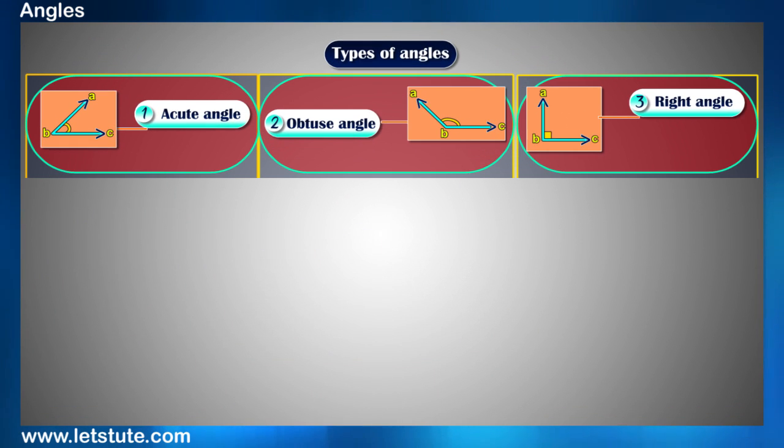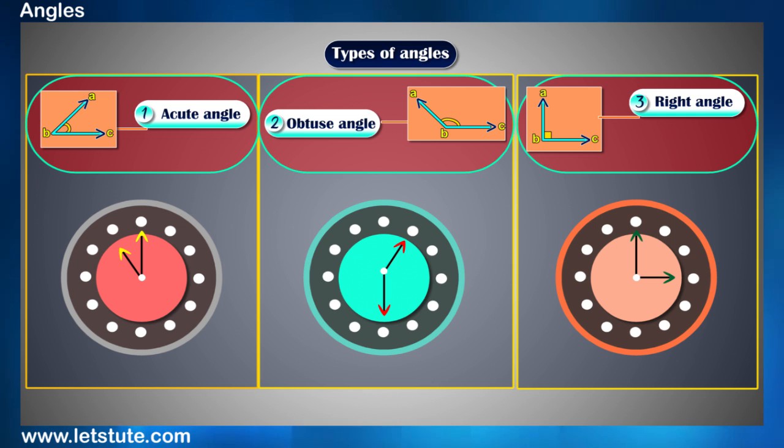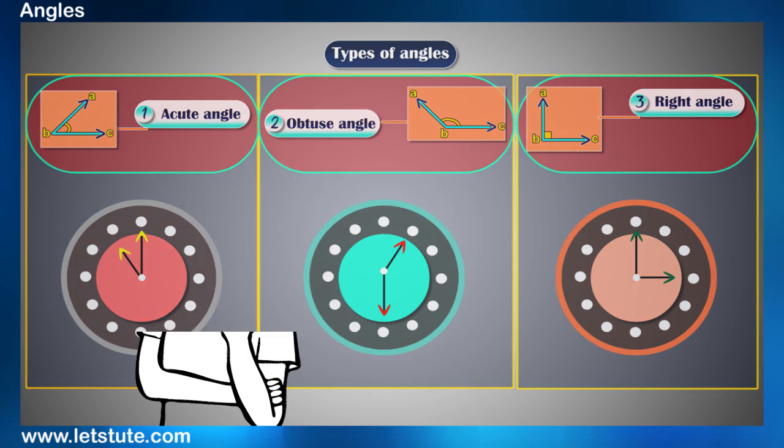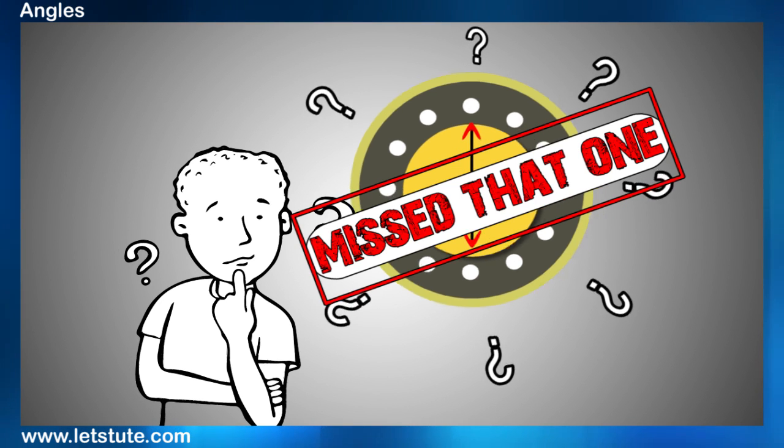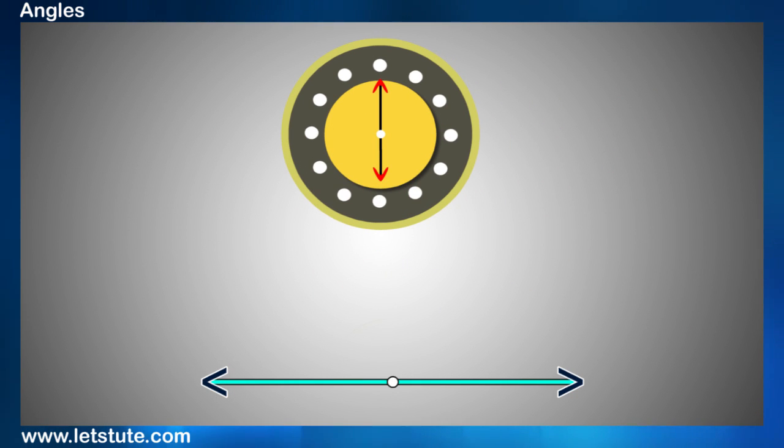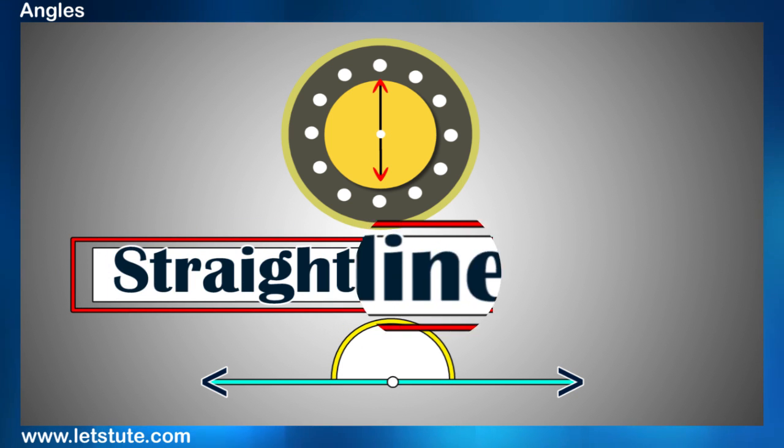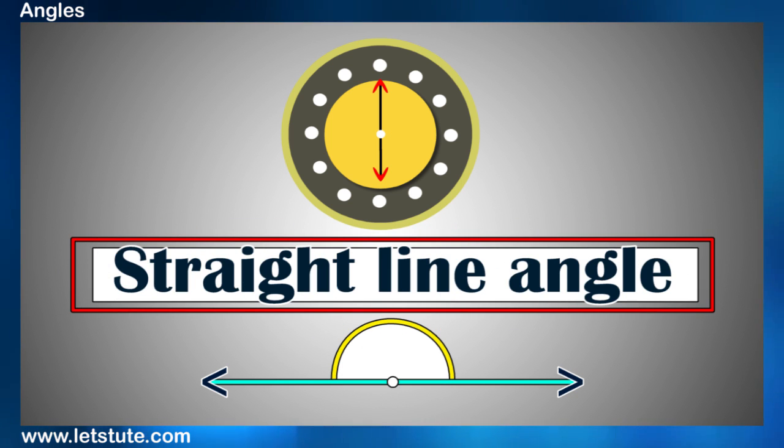Well, these three angles cover only the three types of clocks that we have shown. But then what about the fourth clock? Right? We missed that one. The fourth clock also shows an angle called as a straight line angle. And this angle measures 180 degrees.